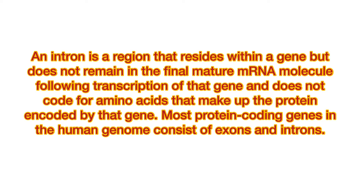Upstream from the AG there is a region high in pyrimidines, or polypyrimidine tract. Further upstream from the polypyrimidine tract is the branch point, which includes an A nucleotide involved in lariat formation. The consensus sequence for an intron is: GGG UREGU — intron sequence — YURAC, Y-RICH, and CAGG.